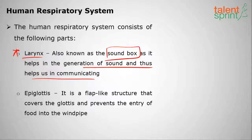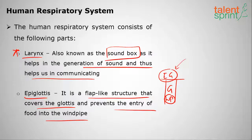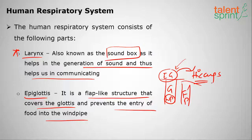Next is the epiglottis, a flap-like structure that covers the glottis — the wind pipe — and prevents food from entering it. Sometimes food does enter the wind pipe, causing hiccups. We also have a separate food pipe called the esophagus, but when food enters the wind pipe we get hiccups. The epiglottis opens and closes to allow air to enter and leave.